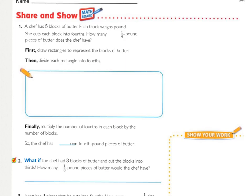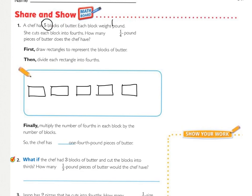Walking through the first share and show. A chef has five blocks of butter. Each block weighs one pound. And she cuts a block into fourths. So how many one-fourth pound pieces of butter does the chef have? The first step they tell you to do, after you should have underlined what you're being asked to find and circling your important information, is to draw the rectangles to represent the blocks of butter. How many blocks of butter? Five. So there's my five blocks, and I tried to make them roughly the same size.